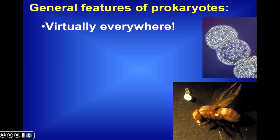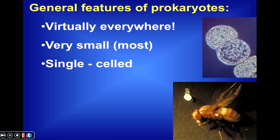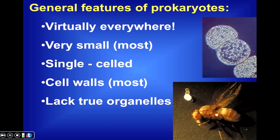General features of bacteria: bacteria are pretty much everywhere, from the depths of the ocean to the highest place on Earth. Typically, bacteria are quite small — so small you can't see them without a microscope, though there are exceptions. Most prokaryotes are single-celled organisms and most also have cell walls, whose chemical composition is different from the cell walls of plant cells and fungal cells. One hallmark of prokaryotes is that they lack true membrane-bound organelles — they don't have nuclei, chloroplasts, mitochondria, etc.